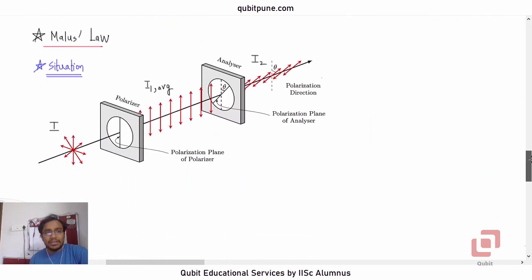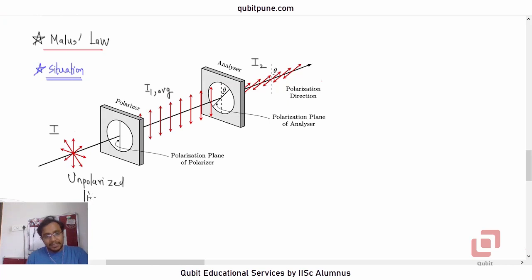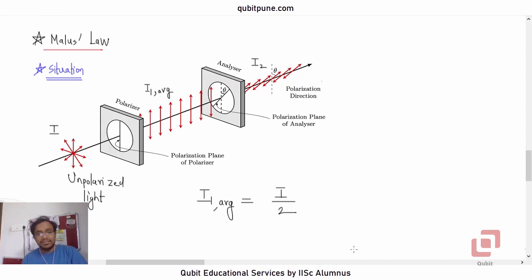The important law here is Malus' law. I is the intensity of the unpolarized light. When this unpolarized light is passed through a polarizer, we have to average the intensity of the emergent wave.